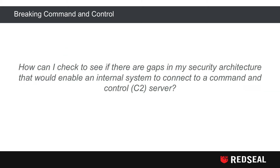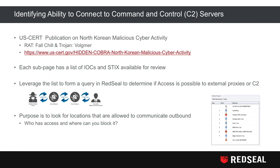A full list of these can also be found at US-CERT. Breaking command and control: how can I check to see if there are gaps in my security architecture that would enable an internal system to connect to a command and control server? The first thing you would do is identify the ability of internal systems to connect to command and control servers.